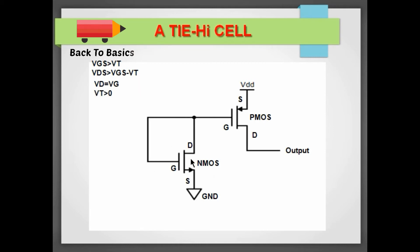If you see, the gate and drain of this NMOS transistor are shorted together, therefore this VD is equal to VG, and VT is always going to be greater than 0 for enhancement type transistor. Therefore the second equation is always going to be true.